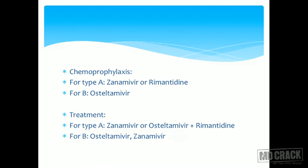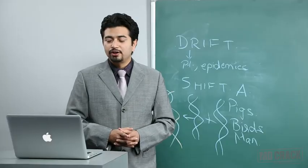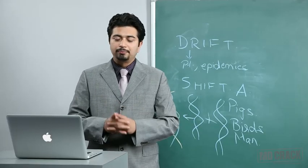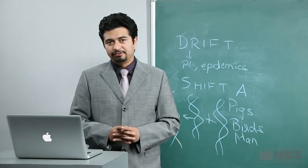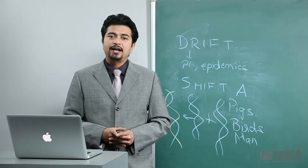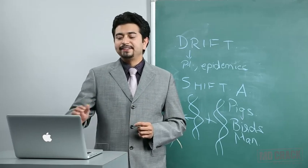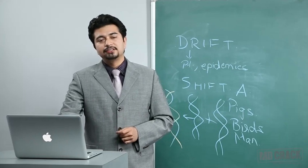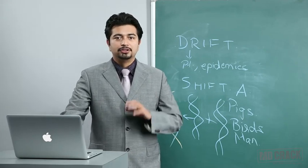Chemoprophylaxis has been revised. For type A, zanamivir is used; if unavailable, rimantadine can be used. For type B, oseltamivir is used. For treatment, type A uses zanamivir or the other older drugs, and type B infection is treated with oseltamivir and zanamivir. The drugs for chemoprophylaxis and treatment are essentially the same.